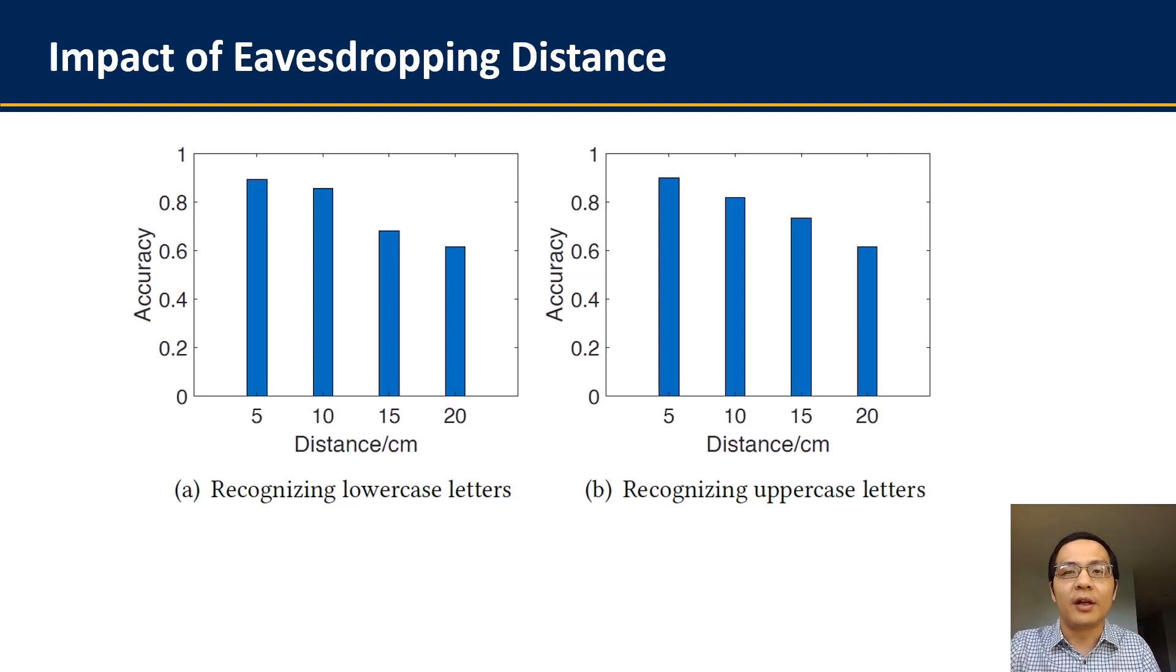And we further conducted more detailed experiments to investigate the different factors that may affect such accuracy. The eavesdropping distance is the most important factor. So as you can see from this figure, MagHacker can have the maximum performance when the eavesdropping distance is within 10cm. And when this distance increases to 20cm, the accuracy may drop to 60%. However, as we said before, we can use other techniques such as word spell checking to further improve the accuracy afterwards. And such accuracy could be further improved to 70% in this case.